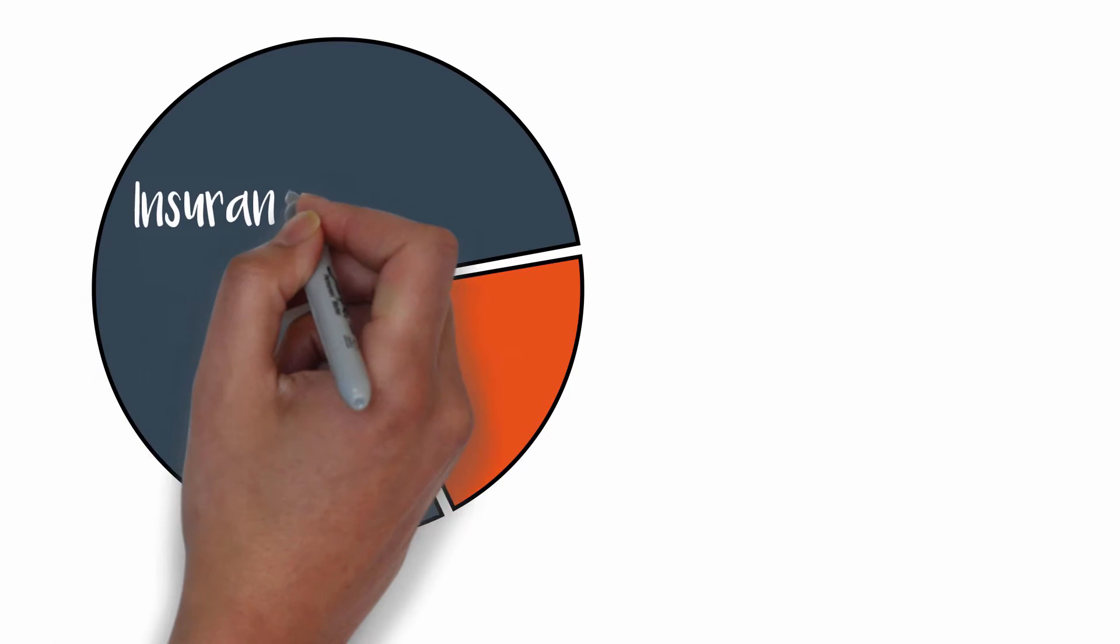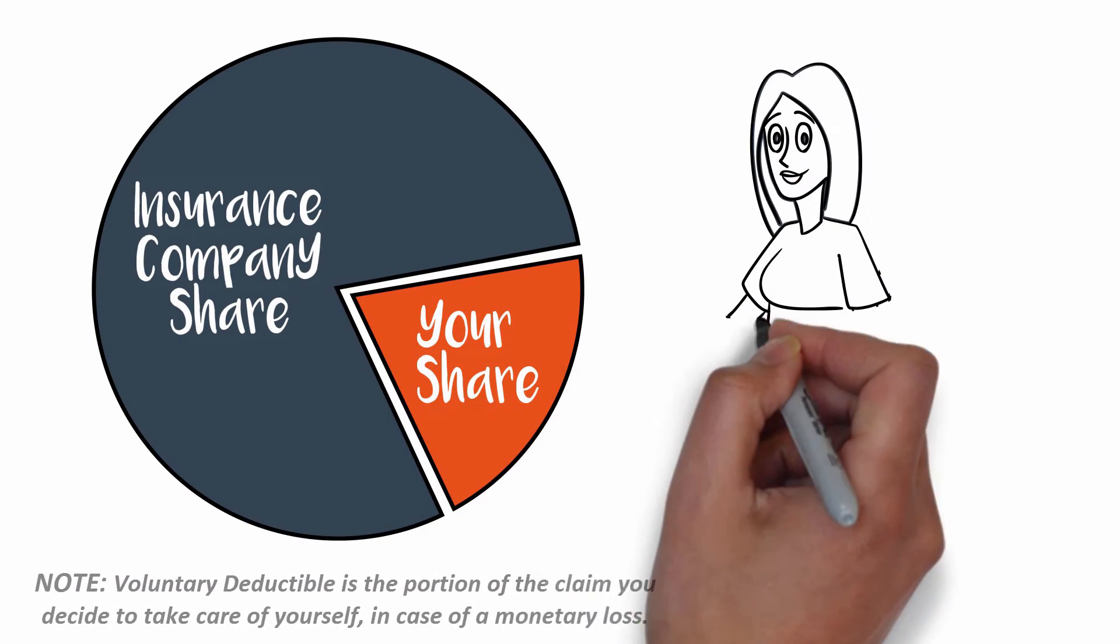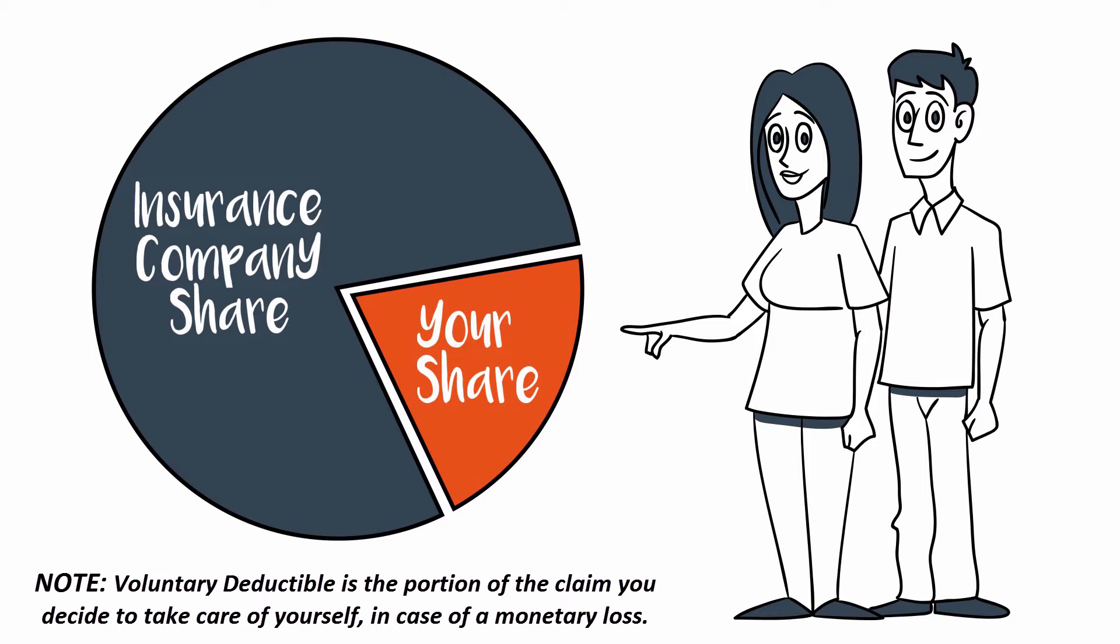But that's not all. Shania explained how the best policy might need certain adjustments from their end as well, like choosing the right amount for voluntary deductible.